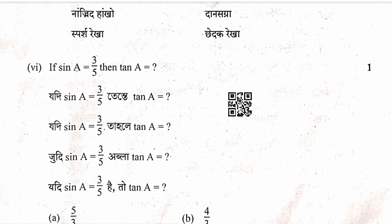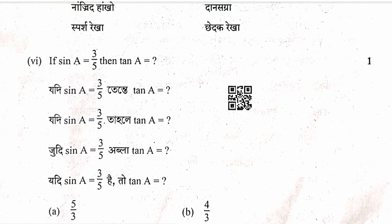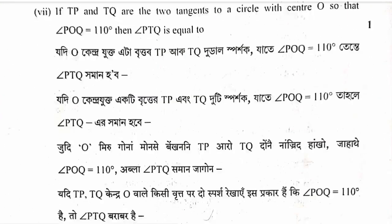Question 7: If sine A equals 3 by 5, then find tan A. Since sine A equals P by H, P equals 3 and H equals 5. Using Pythagoras theorem, B equals 4. Therefore tan A equals P by B equals 3 by 4. Option C is correct.